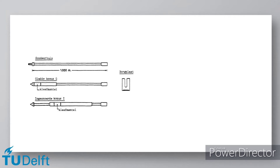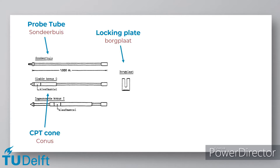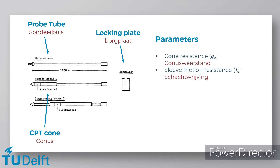Let us take a closer look at the measuring cone. The cone is pushed into the ground by the apparatus. Several probe tubes can be used to extend the measuring device, and the wire connecting the CPT cone and the transmitter runs along the entire length of the probe tubes. One will also find the steel locking plate, which can be placed under the broader parts of the probe tubes to ensure they do not fall into the hole during the experiment. The cone measures two parameters: at the tip, cone resistance is measured in megapascals; on the sleeve, sleeve friction resistance is measured, also in megapascals. Using these two parameters, the so-called friction ratio of the soil can be calculated by dividing the two.